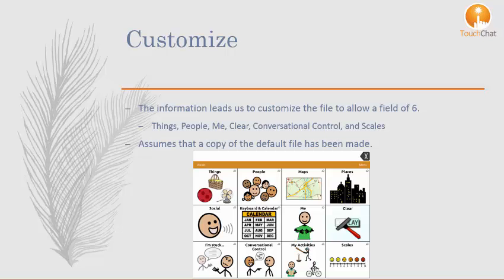On this 6-location grid, we will keep these buttons: Things, People, Me, Clear, Conversational Control, and Scales.